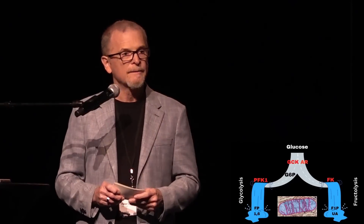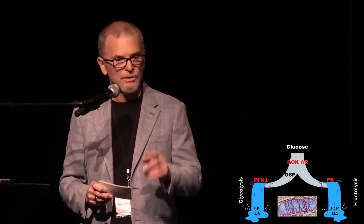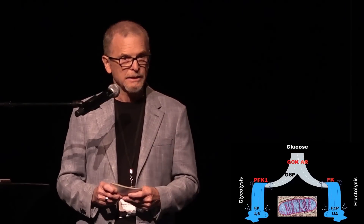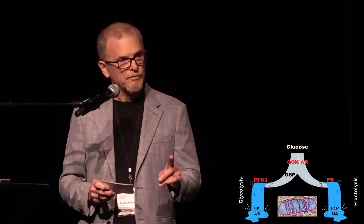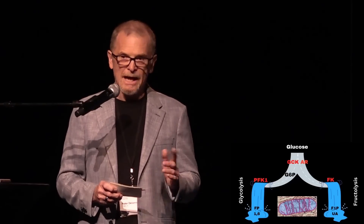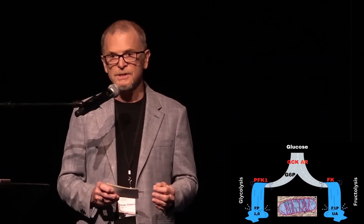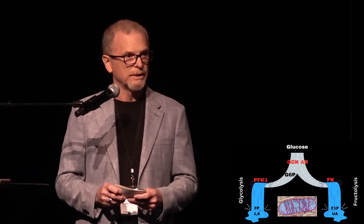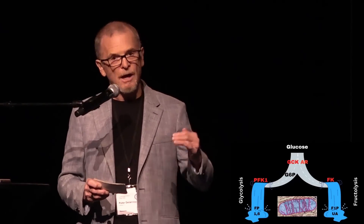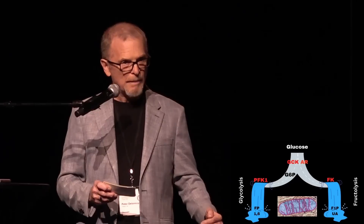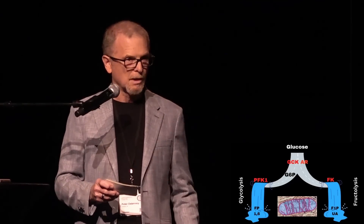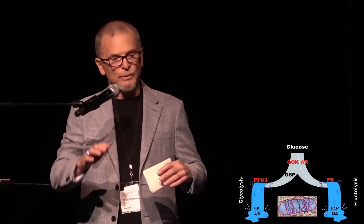I consider glucokinase and aldose reductase to be a gateway — both are sensitive to the concentration of glucose. Both phosphofructokinase-1 and fructokinase are special: they each catalyze trapdoor reactions. These are irreversible doorways — once opened, a 100% commitment is made to the pathway. If it's PFK1, you're committed to full-on glycolysis; if it's fructokinase, we have full-on fructose-uric acid metabolism.